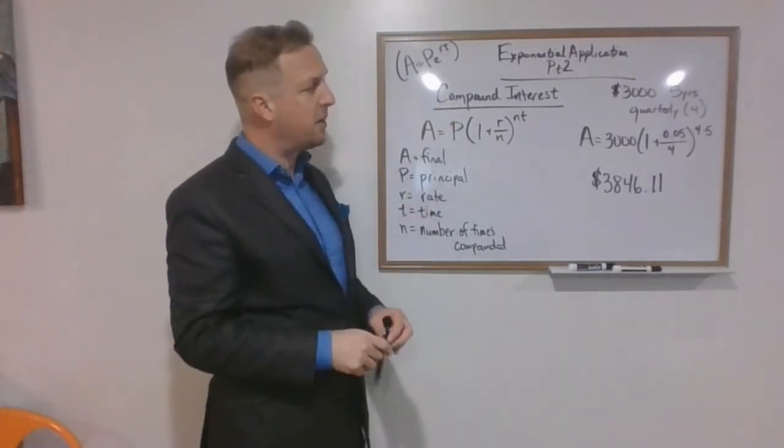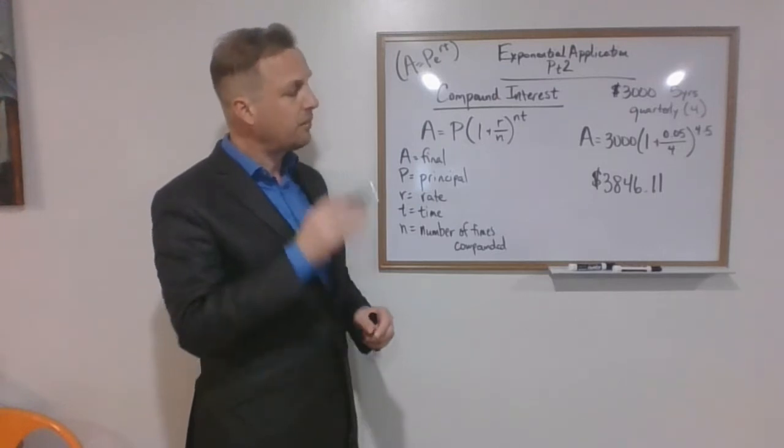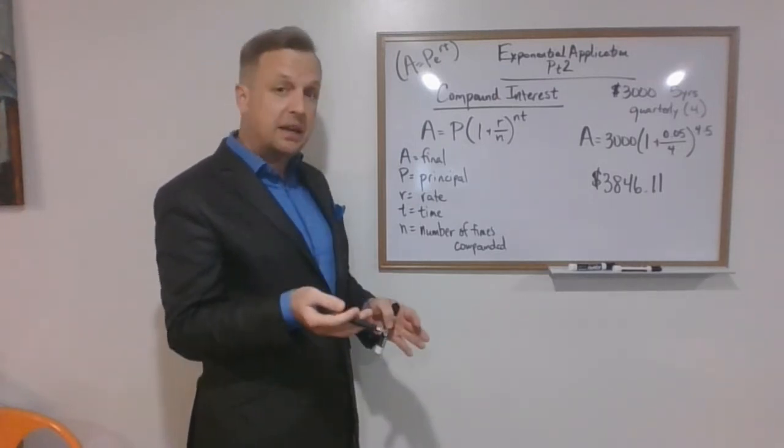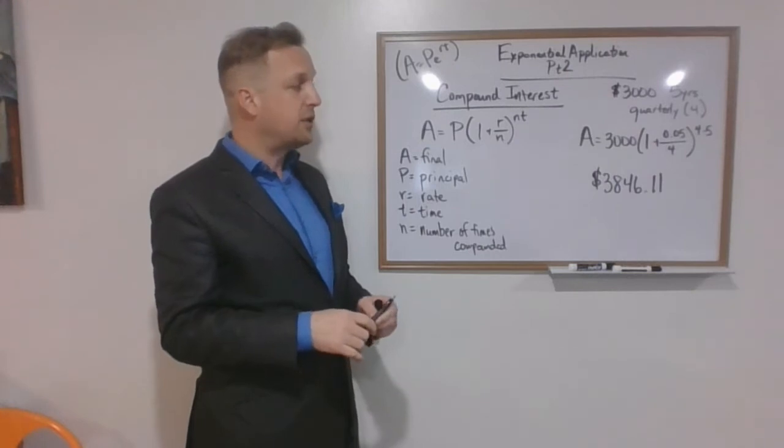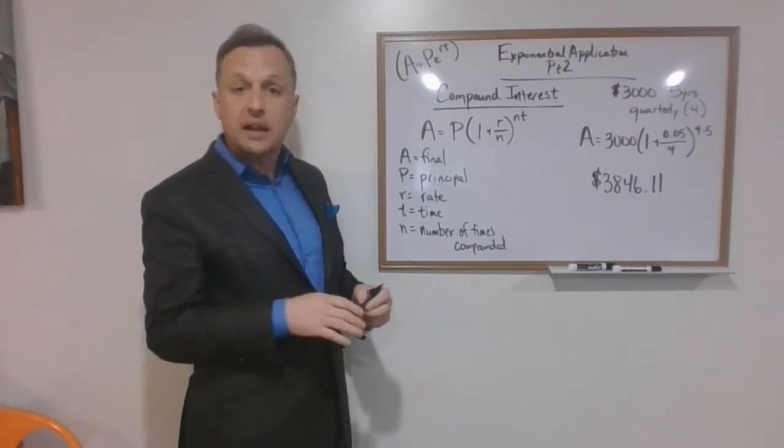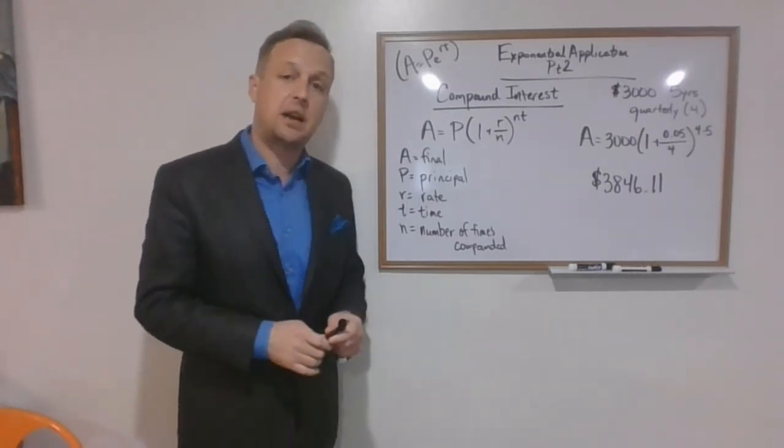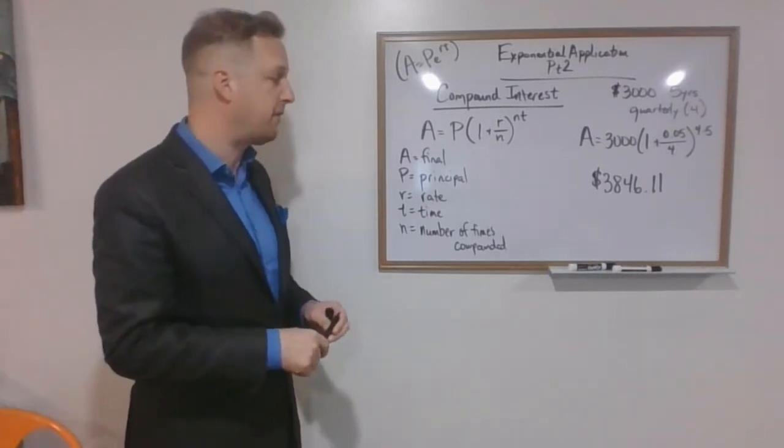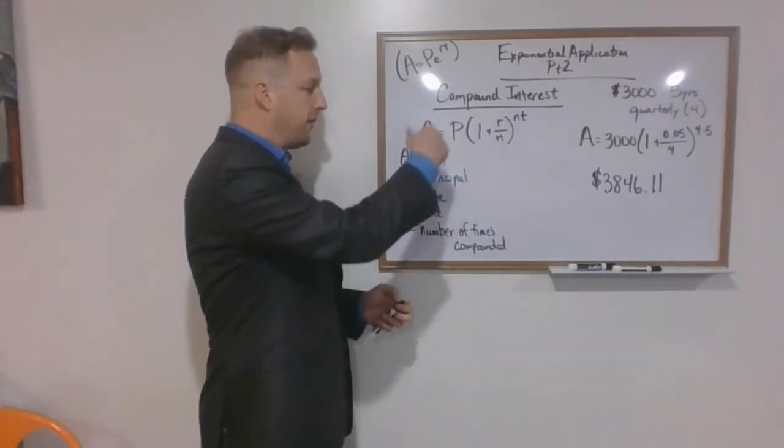So let's say we've got a bank account, we put $3000 in, we're going to leave that money in the account for 5 years, and interest is going to be compounded quarterly. And the idea is how much am I going to have when that 5 years is up?